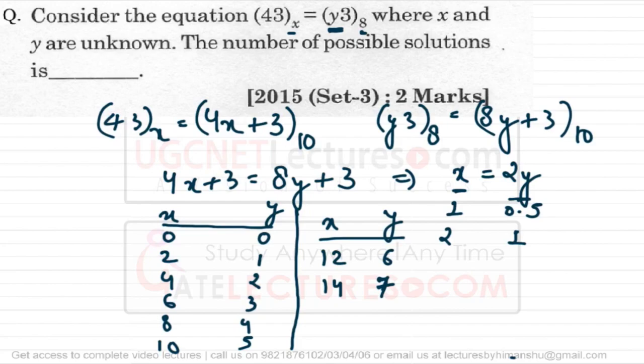There is also a restriction on x. The digit 4 appears in the number 43 in base x, so x must be greater than 4. Solutions where x ≤ 4 — that is (y=0, x=0), (y=1, x=2), and (y=2, x=4) — are invalid. The valid solutions have x values 6, 8, 10, 12, and 14, corresponding to y = 3, 4, 5, 6, 7. So the number of possible solutions is 5.